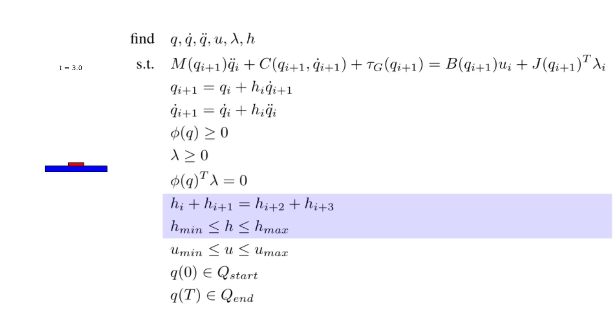These two constraints on h allow for variable discrete time stepping, and we also constrain the minimum and maximum allowable control effort u. Finally, we constrain the desired start and end configurations of the pan and pancake.